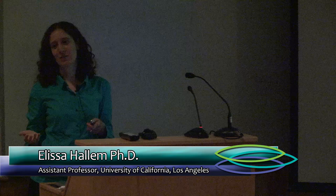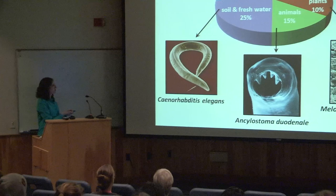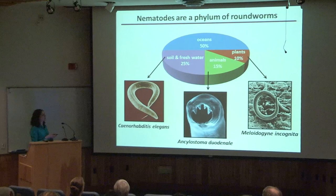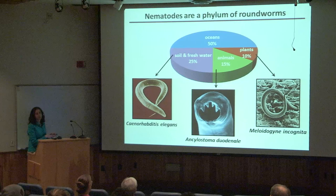I'm going to tell you about some of our work on the host-seeking behaviors of parasitic nematodes. As I'm sure you know, nematodes are a large and diverse group of roundworms. Some nematodes are free-living, and this group of course includes C. elegans. Other nematodes are parasitic — some are parasites of animals, including humans, while others are parasites of plants. My lab works with both free-living and parasitic nematodes.